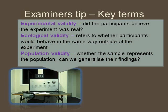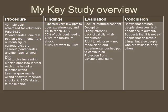A top tip for high exam grades: don't just refer to 'validity' generically — differentiate between types. Experimental validity asks whether participants believed the experiment was real and what evidence supports this. Ecological validity refers to whether participants would behave the same way outside an experimental setting in real life. Population validity asks whether the sample represents the broader population and whether we can generalise. A good revision strategy is drawing together a summary covering two marks each for aim, method, results, and conclusion, plus evaluation points.